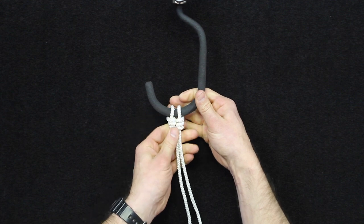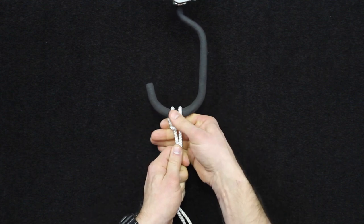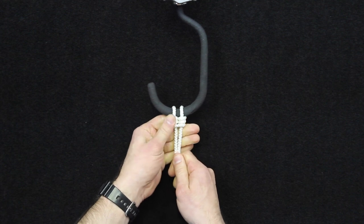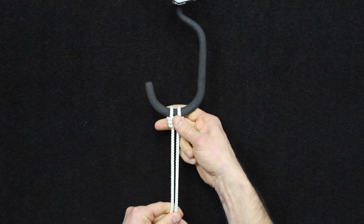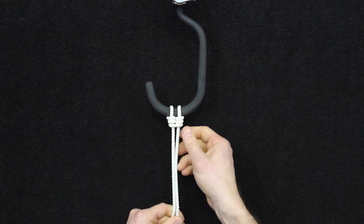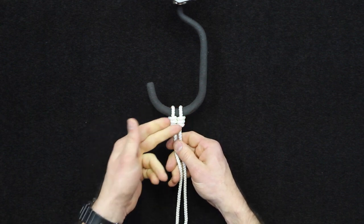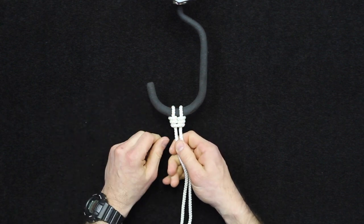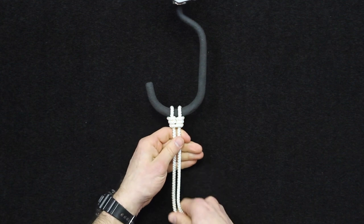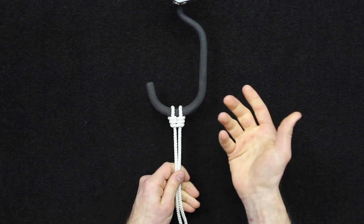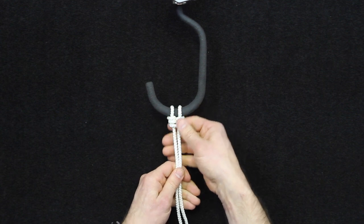So this is, in my opinion, a little more secure than a girth hitch. While the strength rating is yet to be determined, just because you're creating wraps in the line. Each time you put a twist or a knot in the line, it decreases the strength of the line. But in terms of security, I think this is better.